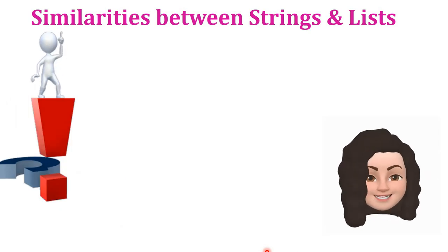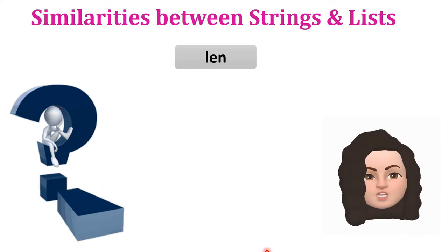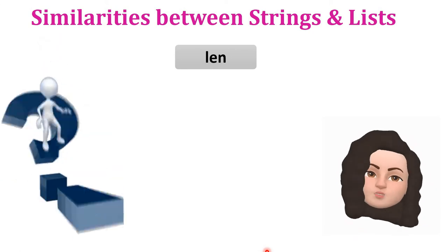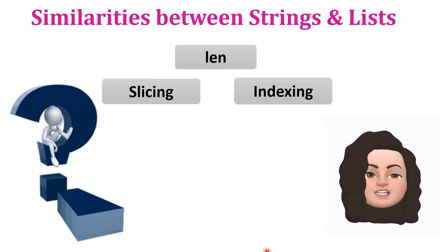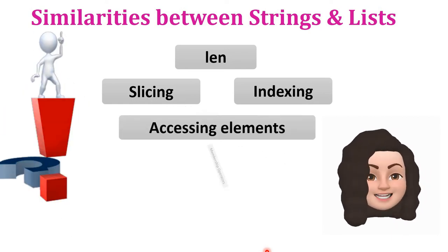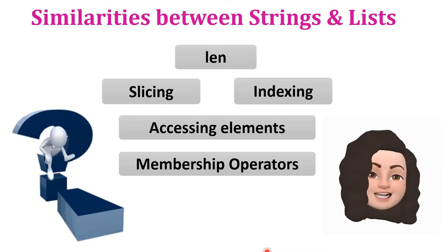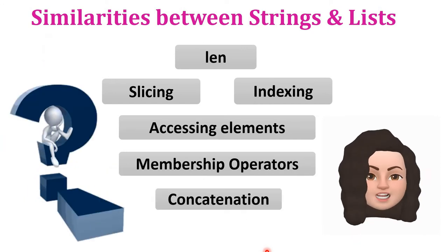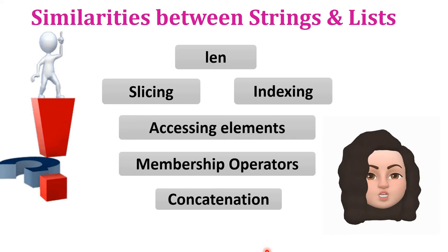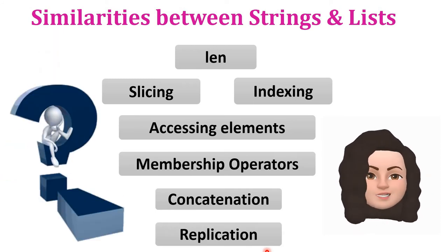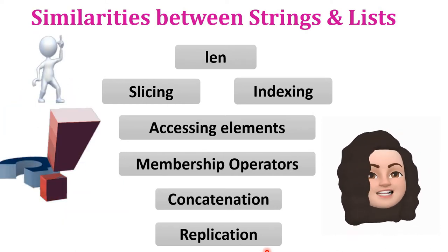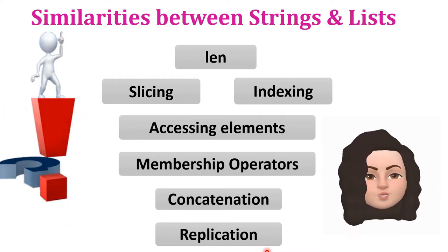What are the similarities between strings and lists? The len function calculates the number of elements in both a string and a list. Indexing and slicing work the same way for both — forward indexing, backward indexing, slicing single and multiple elements. Membership operators 'in' and 'not in' are used in both. The concatenation operator plus combines two strings or two lists. The replication operator asterisk repeats a string or a list a specified number of times.